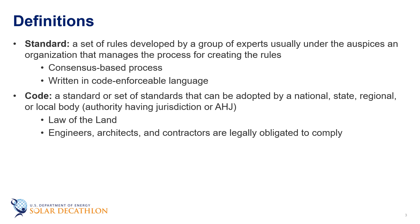Often the rules start as standards and those standards are adopted as part of the building code. This is the case for ASHRAE 90.1, which is the energy efficiency standard for commercial buildings. ASHRAE 90.1 is updated every few years to include new technology and ideas. It is up to the authority having jurisdiction to adopt a specific version of the standard into the building code.